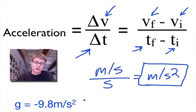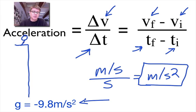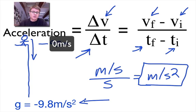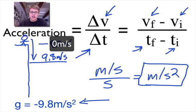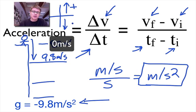One acceleration you should know is the acceleration due to gravity: negative 9.8 meters per second squared. A person standing at the top of a cliff starts at 0 m/s, and after 1 second they're going 9.8 m/s — about 23 miles an hour. After 2 seconds, 46 miles an hour; after 3 seconds, about 68 miles an hour. It's negative because on our coordinate system downward is the negative direction.